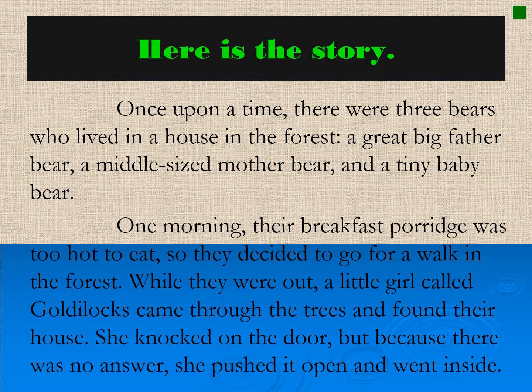Once upon a time, there were three bears who lived in a house in a forest — a great big father bear, a middle-sized mother bear, and a tiny baby bear. One morning, their breakfast porridge was too hot to eat, so they decided to go for a walk in the forest. While they were out, a little girl called Goldilocks came through the trees and found their house. She knocked on the door, but because there was no answer, she pushed it open and went inside.